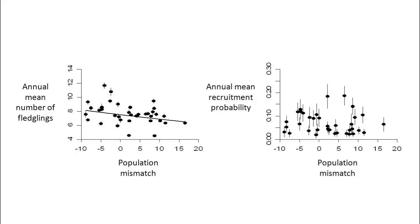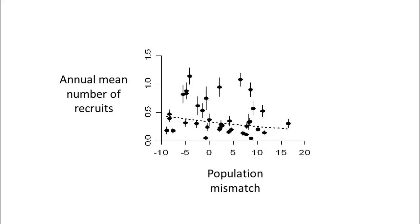In contrast, there was no significant across-year relationship between annual mean recruitment probability and population mismatch. The net result is that the annual mean number of recruits per female, the vital rate that most strongly influences population dynamics in the species, shows only a weak and marginally significant relationship with population mismatch.